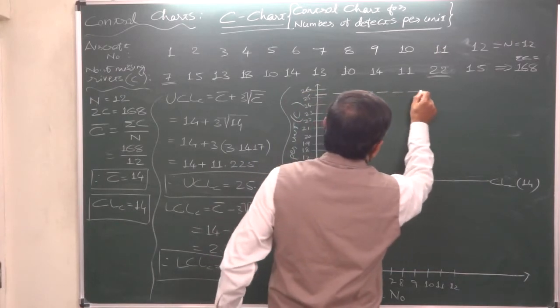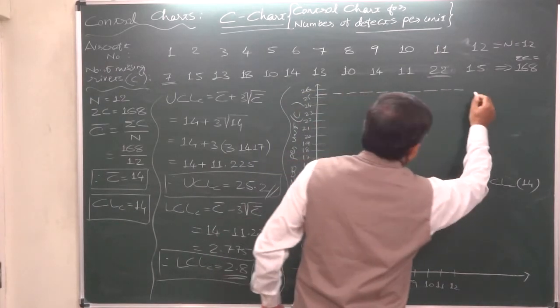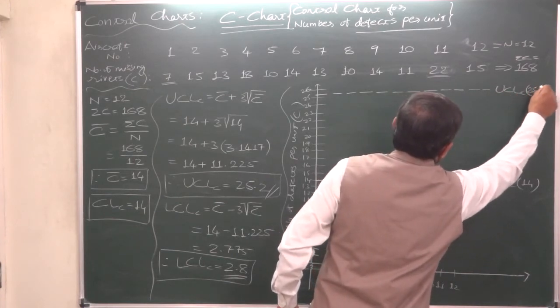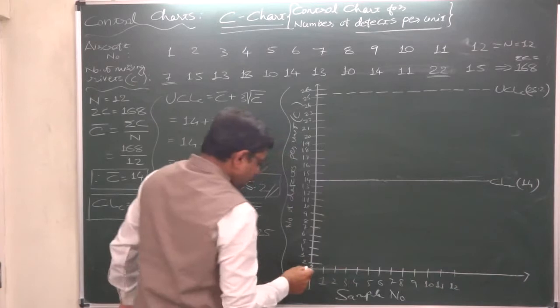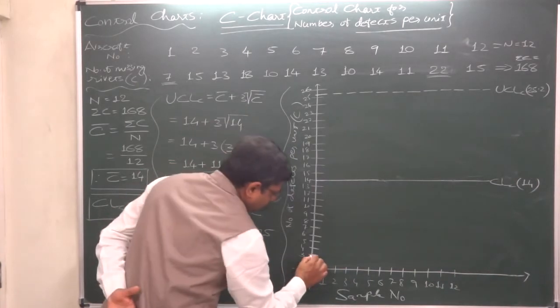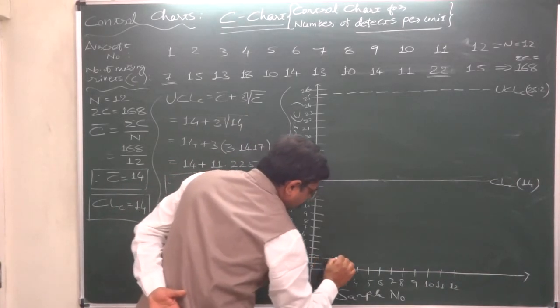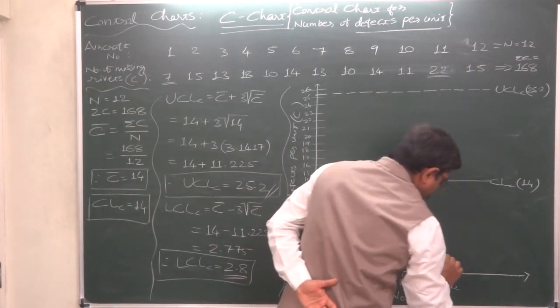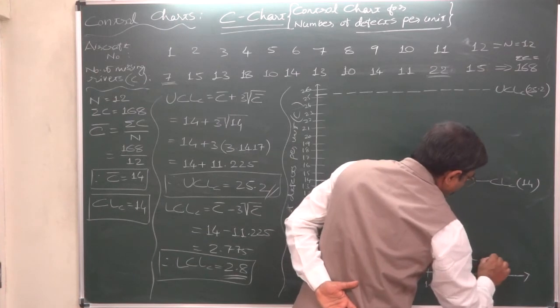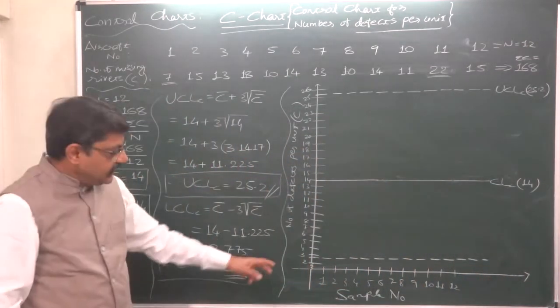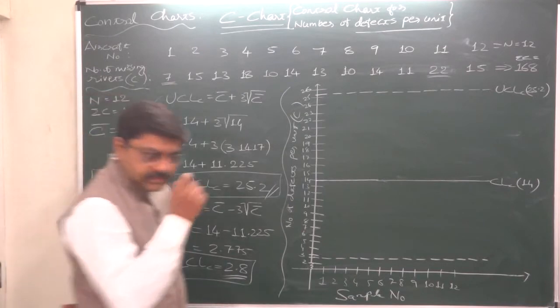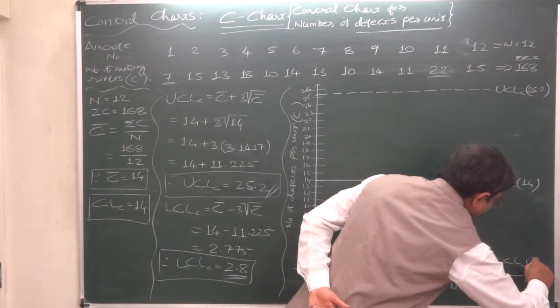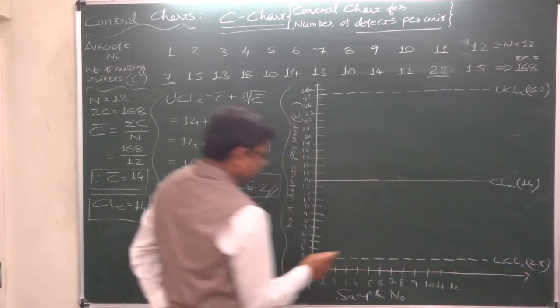Upper control limit is 25.2—2 millimeters above 25. Upper and lower control limits are drawn as dotted or broken line. All these things are important. And lower control limit is 2.8—2 millimeters below 3. Sometimes it happens that in case of C chart, the calculation of lower control limit shows a negative number, then we take it as 0. Here in this case, lower control limit is 2.8.